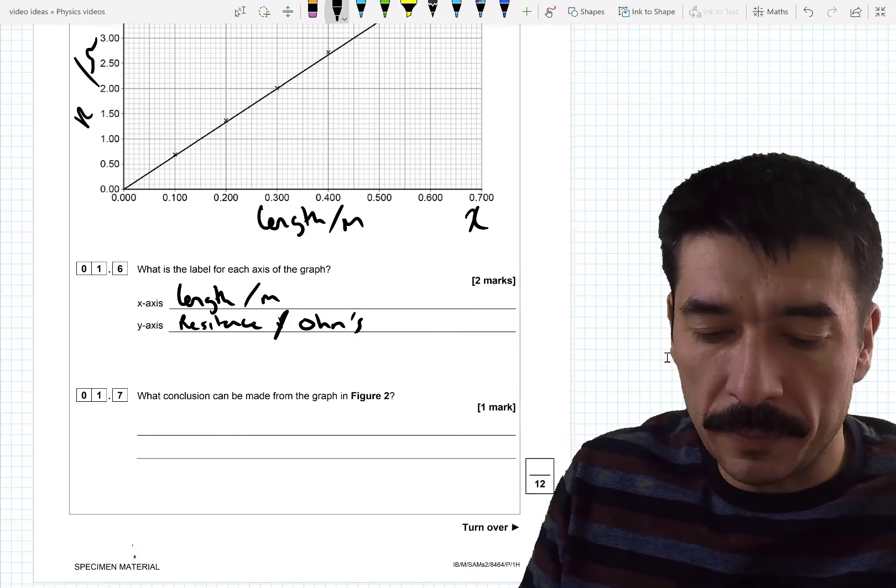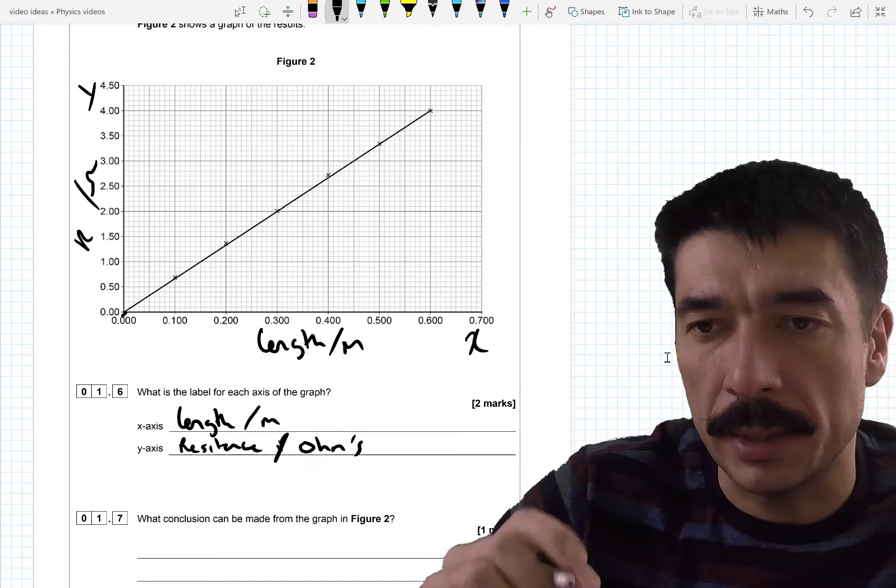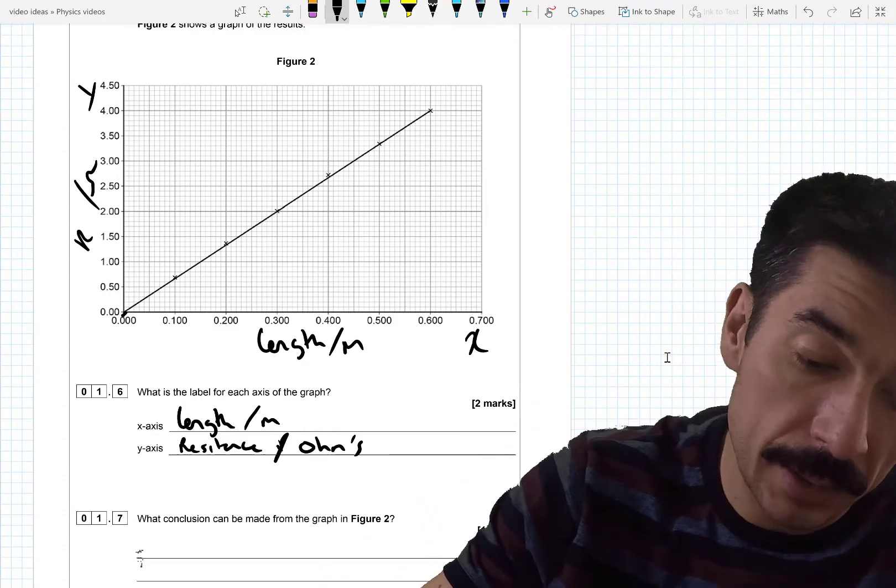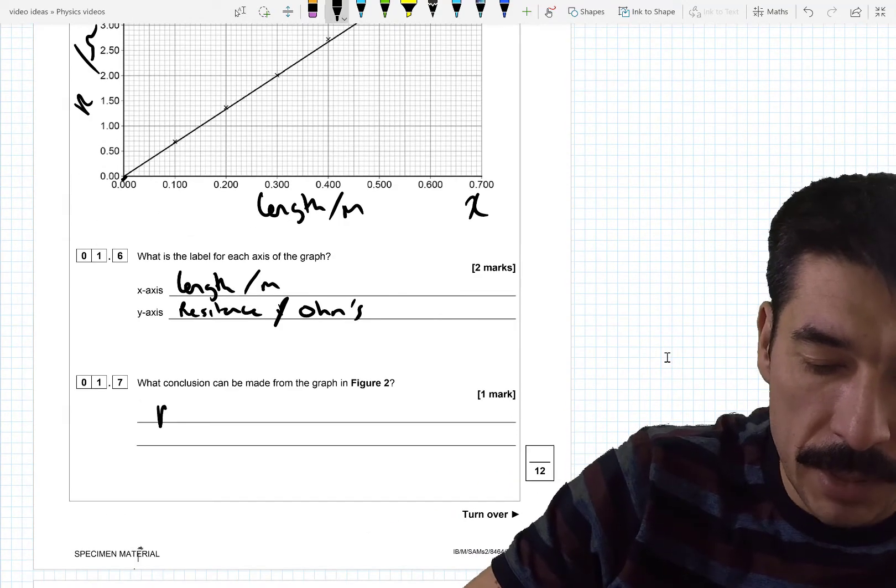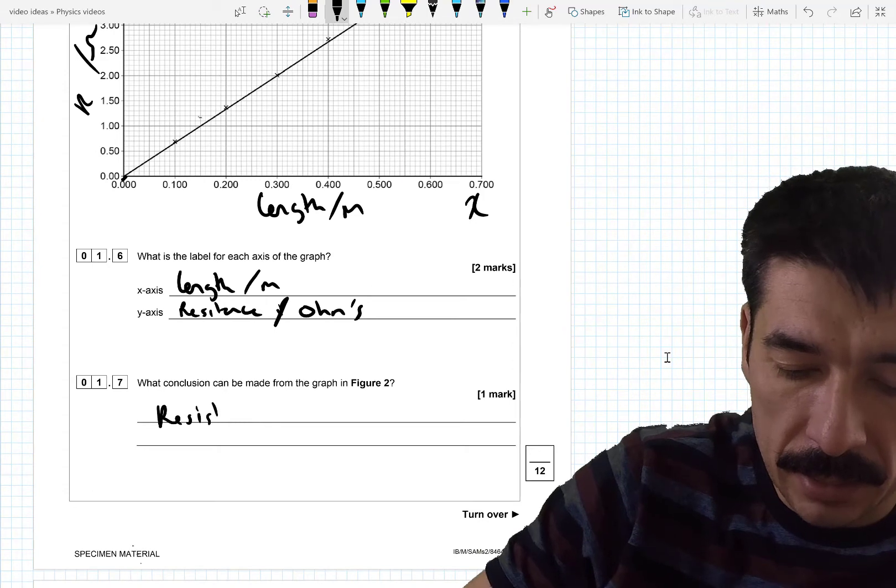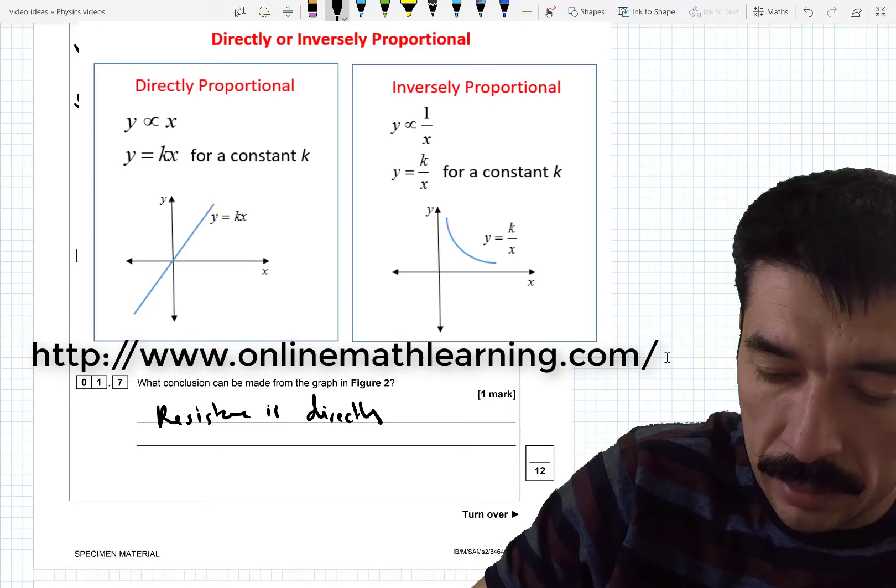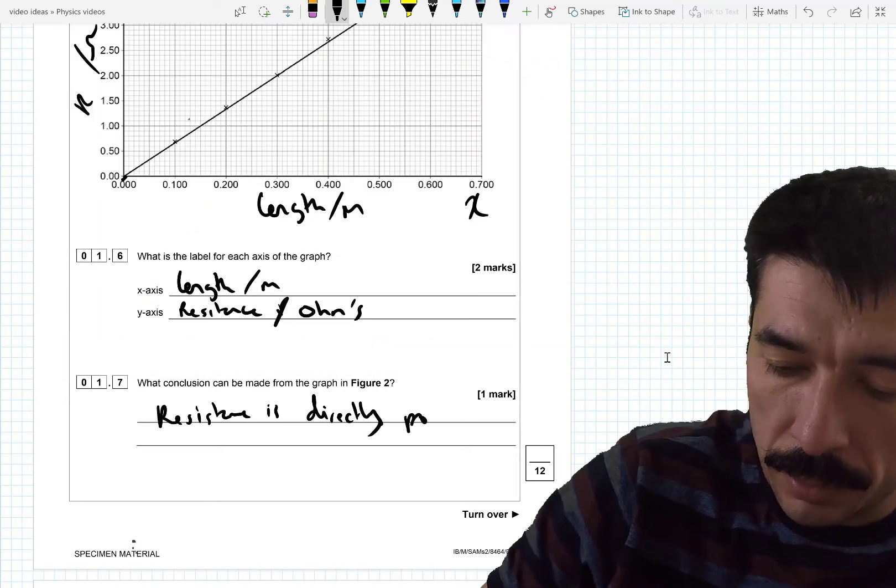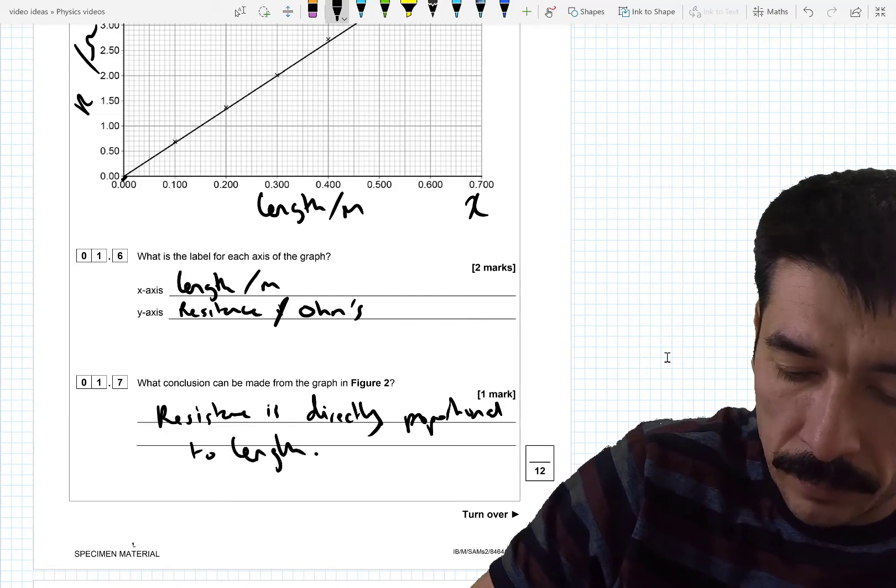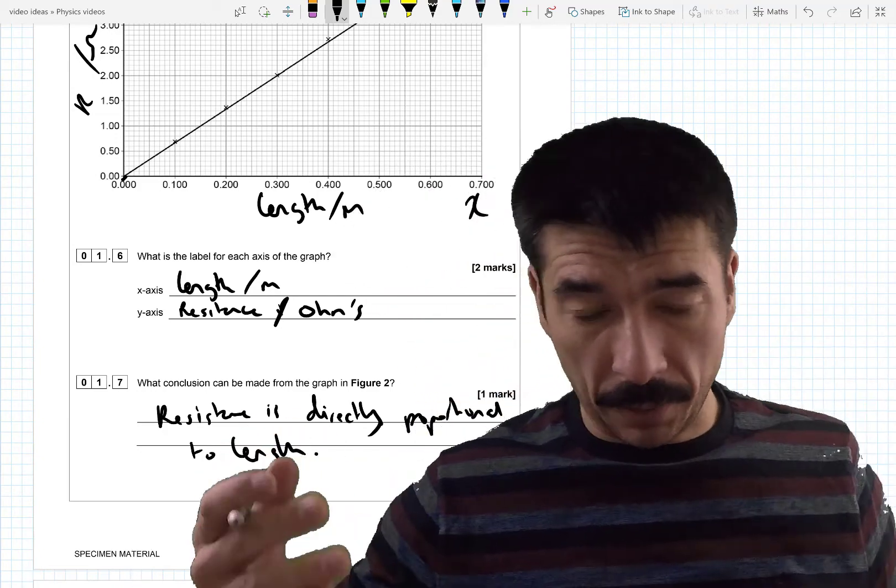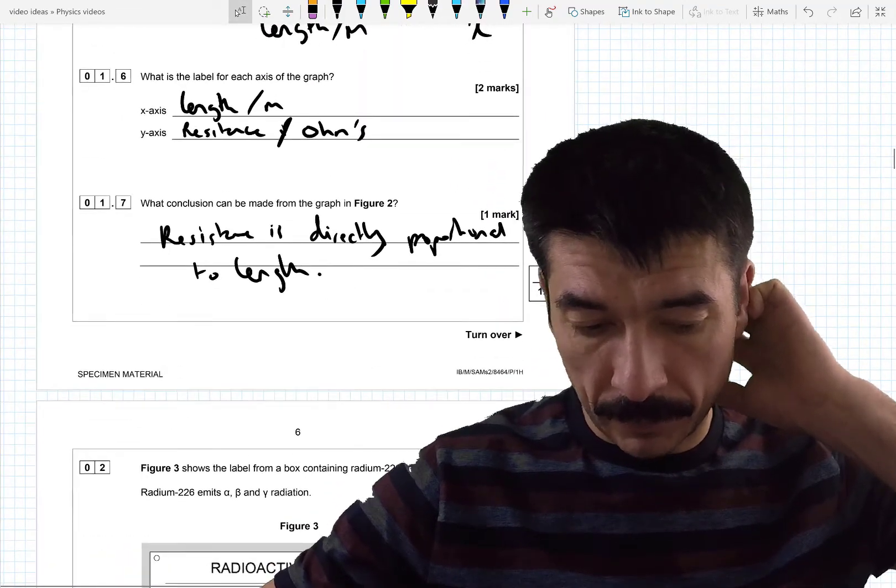What conclusion can be made from the graph in figure 2? Right. Couple of things. It starts at the origin. So it is directly proportional. Well it starts at the origin. And it's a straight line. So it's directly proportional. So resistance is directly proportional to length. I suppose an easy way of saying it. If you don't like the word proportional. Is to say. As resistance increases. So does length.